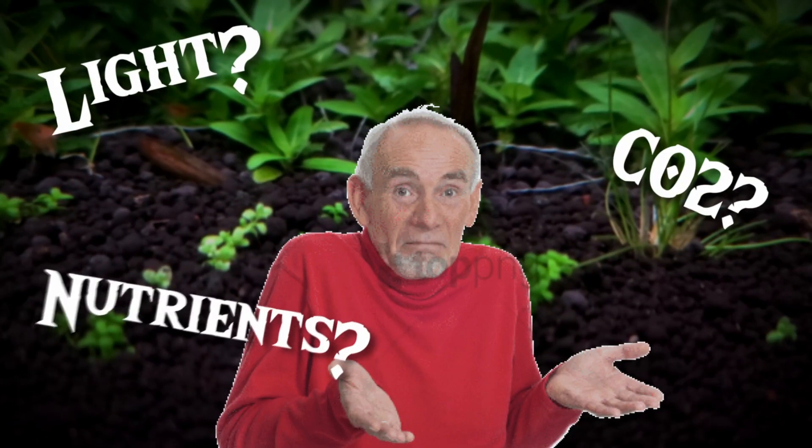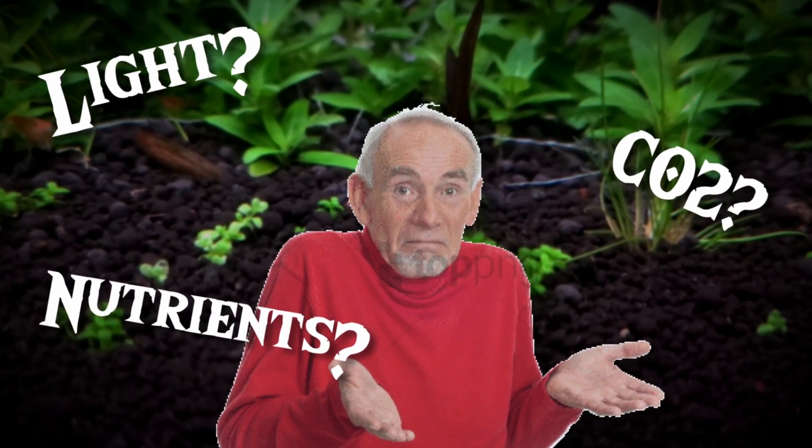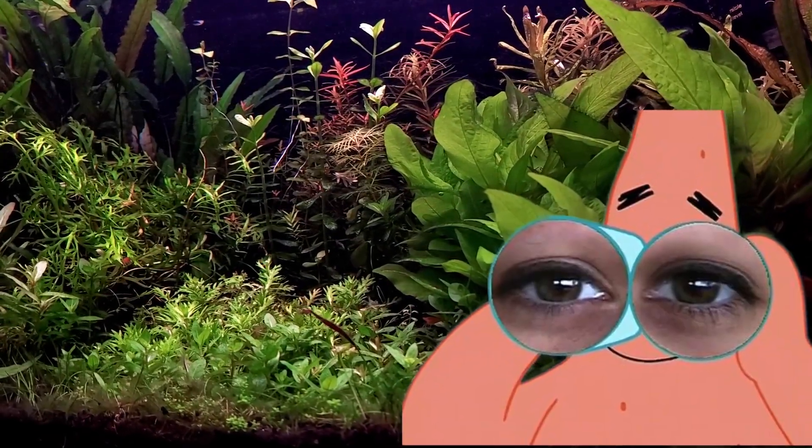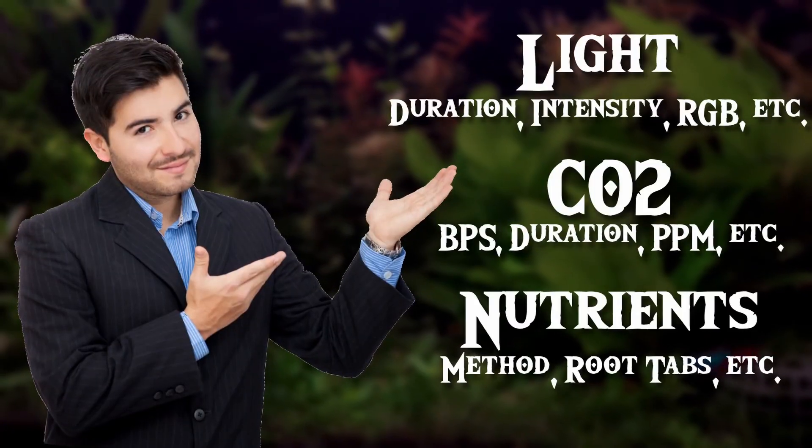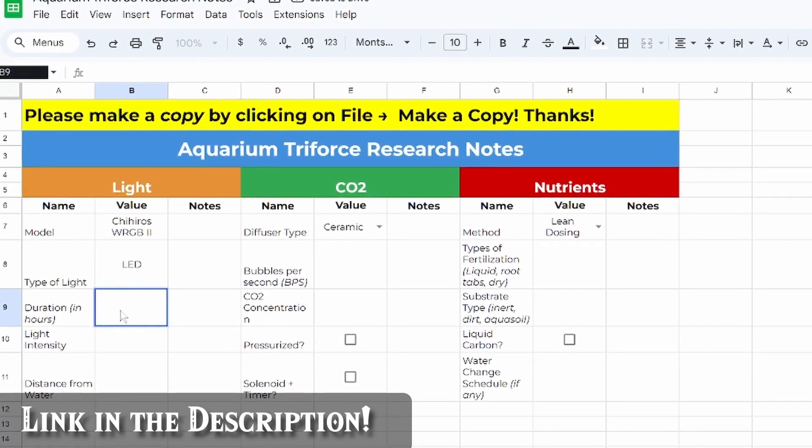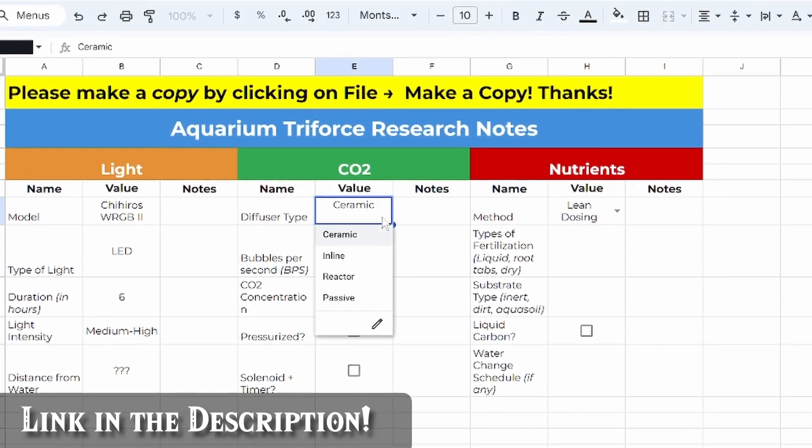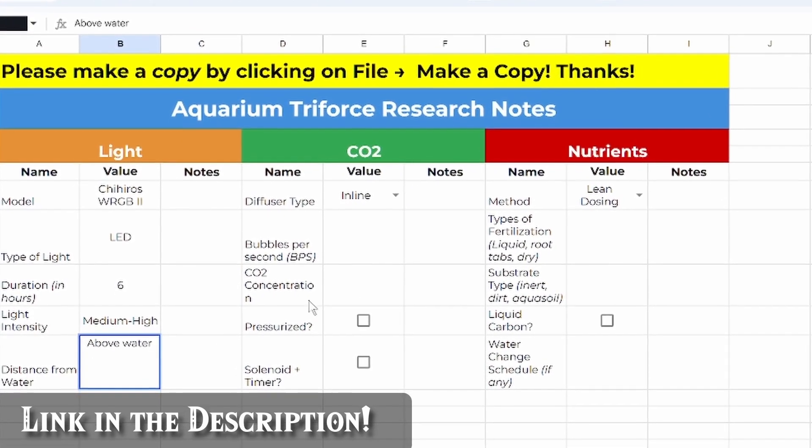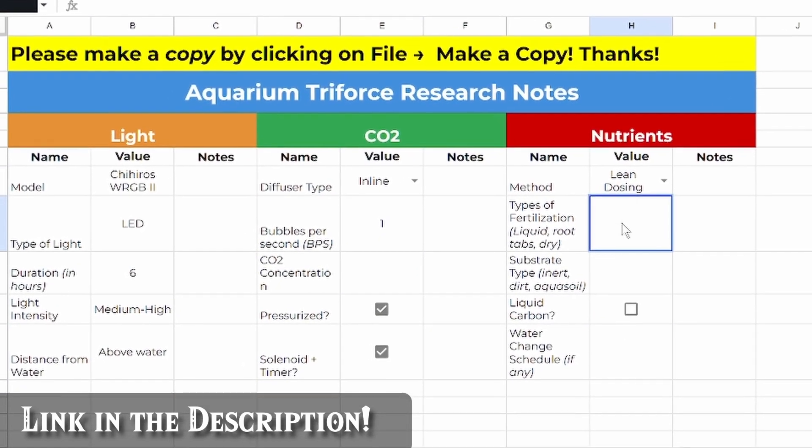But where do you even begin? How can we figure out where to even start tweaking? Let's start by observing your entire tank. Hold off on any actions until you've got all the data. Document the health of each plant species and take note of any signs of deficiencies. Also, record any algae species present. These are the tales your tank is telling you.